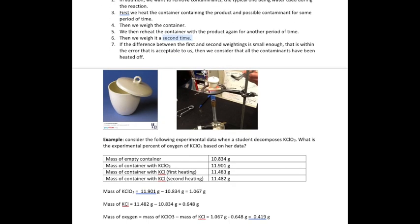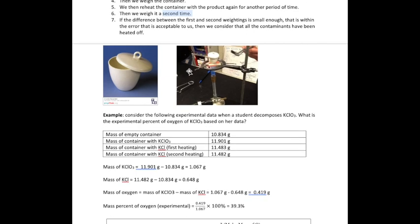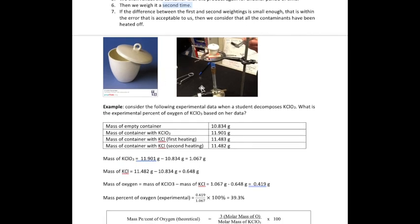Let me show you a quick example on how to do the calculations with the data you'll get from this experiment. You have your potassium chlorate to begin with, then decompose it to form potassium chloride. The question is: what's the experimental percent of oxygen?